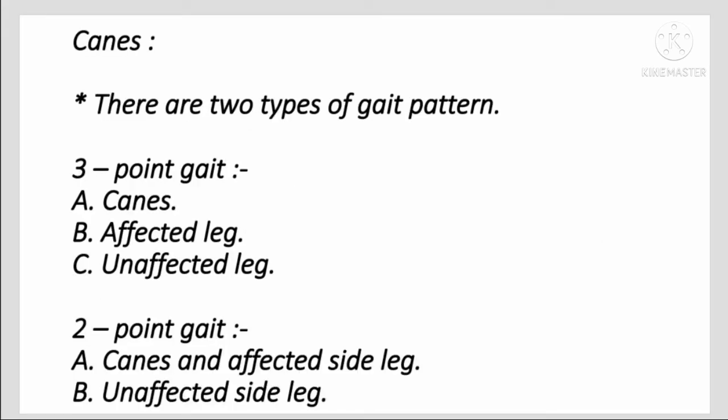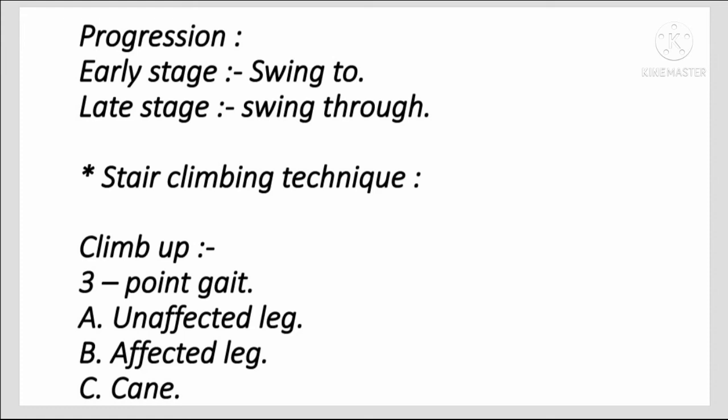Now for canes, there are two types of gait pattern: 3-Point Gait and 2-Point Gait. For 3-Point Gait: cane first, then affected leg, then unaffected leg. In 2-Point Gait: cane and affected side leg together, then unaffected side leg. Progression: early stage swing-to, and late stage swing-through.